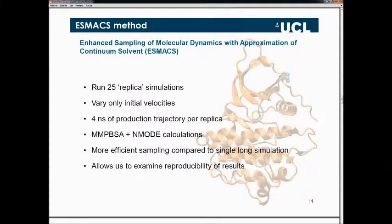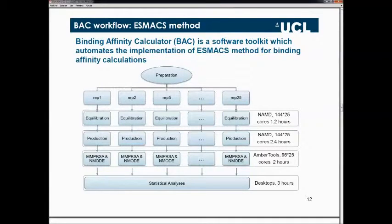To perform this data-intensive workflow, doing it manually would be a tedious task, so automation was really needed. We developed something called the Binding Affinity Calculator, or BAC — a software toolkit that performs this whole protocol automatically using just a few single-line commands. We prepare the model, then equilibration and production jobs are submitted on a remote machine. Once done, data is copied back, statistical analysis scripts are run, and we get a single reproducible binding affinity number with a contracted error bar. All of this is fully automated.